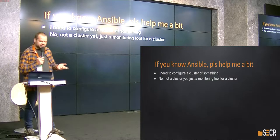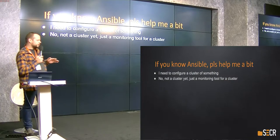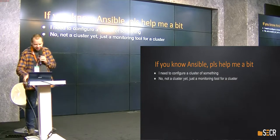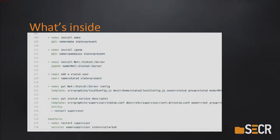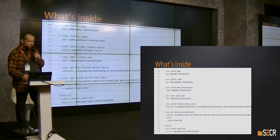I need a cluster monitoring tool and I have a playbook for it. I wrote it about five years ago and I have a role for it on GitHub. What's inside? There are a number of tasks, applied top-down. There is a task which puts a service descriptor somewhere and restarts a supervising tool, because I need a working service.